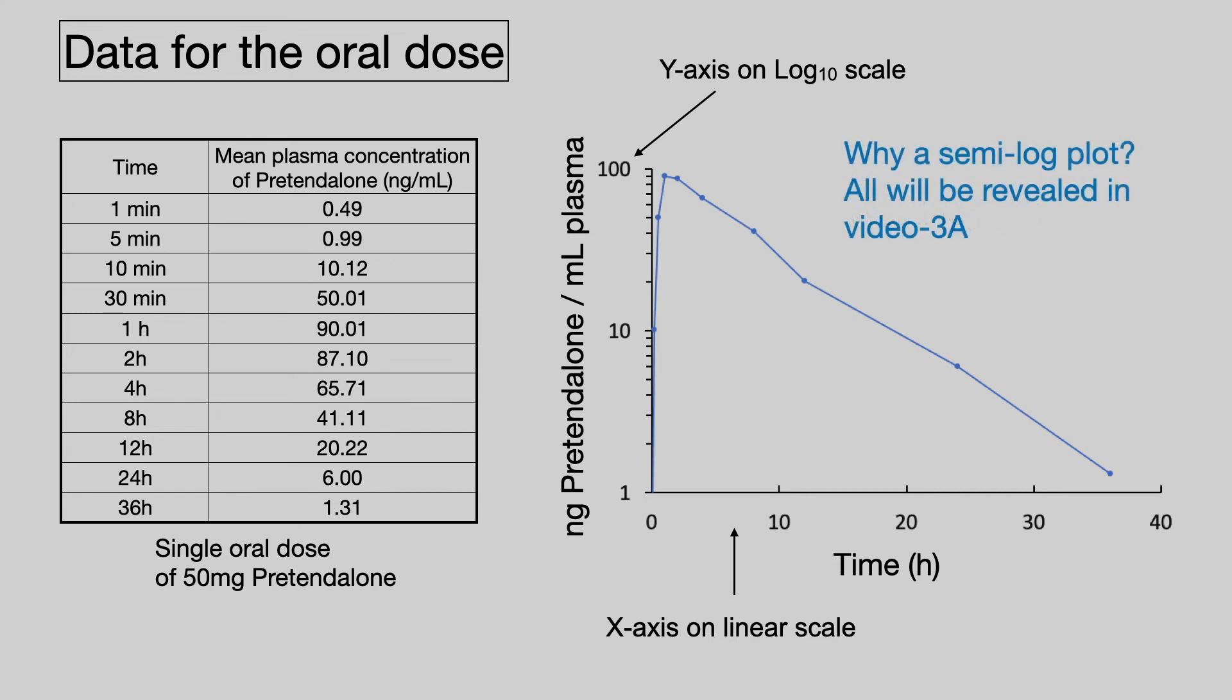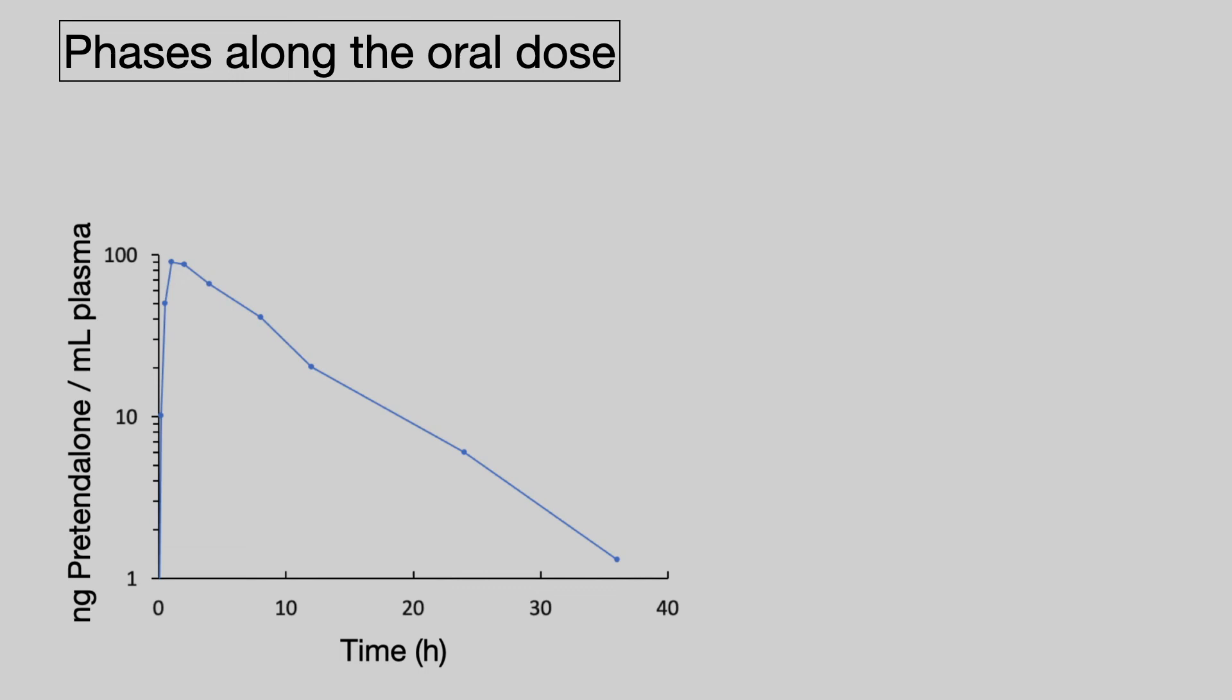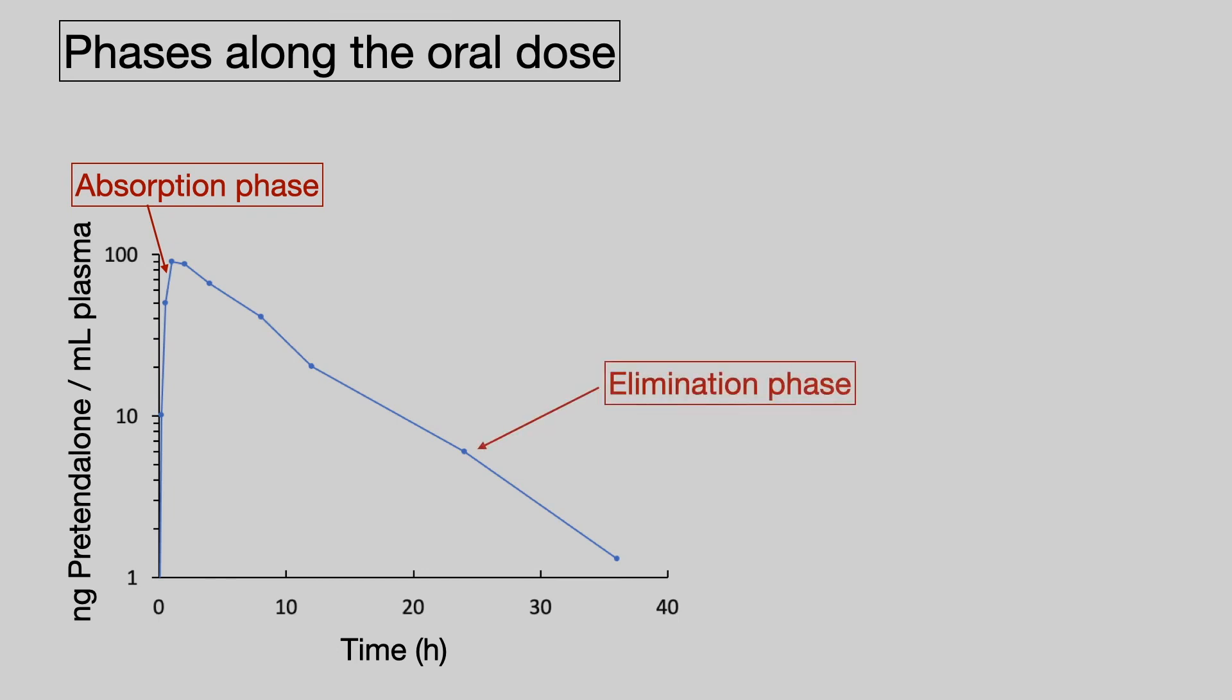Why do we use a semi-log plot? Well, that will be revealed in video 3a. In the meantime, just want to look at the various stages along this plot. For the oral dose, we have an absorption phase where the drug is being absorbed from the gastrointestinal tract into plasma. Then we have an elimination phase where the drug is being eliminated from plasma. The peak drug concentration is known as the C-max and that occurs at the T-max.